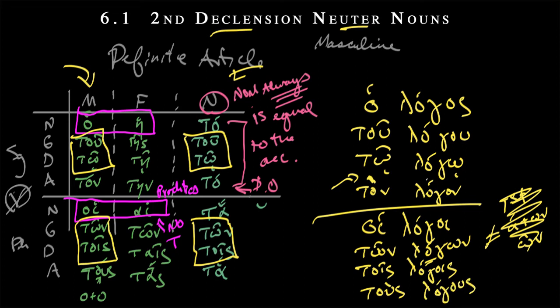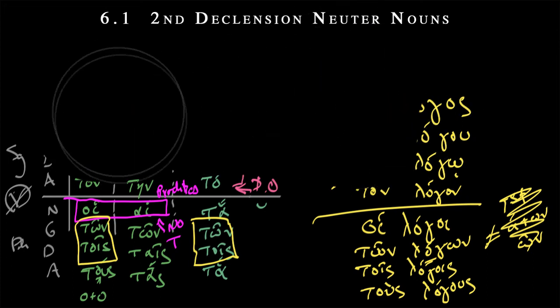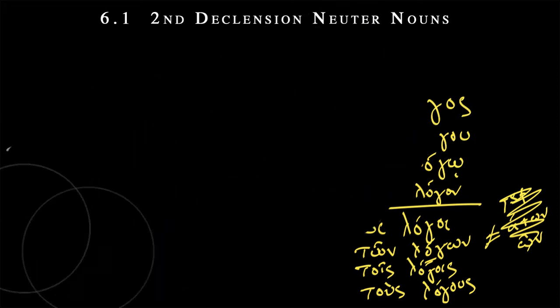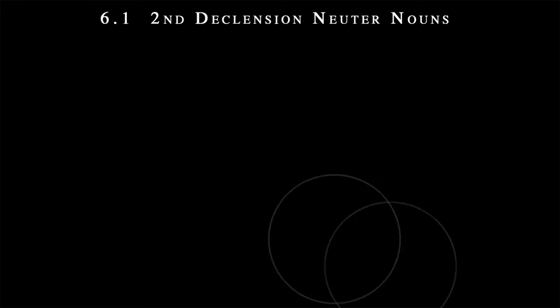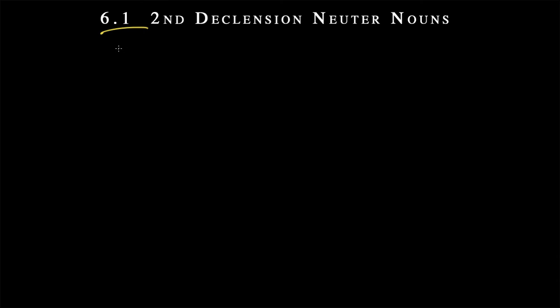I left off the vocative here — it's fine. Let's now erase all of this. Now let's go to chapter 6.1 and talk about the neuter nouns of the second declension.